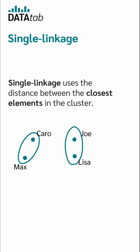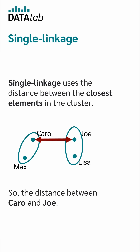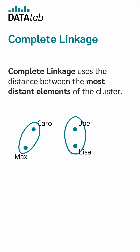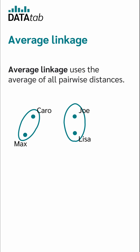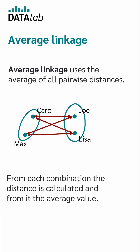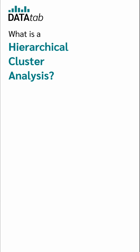Single linkage uses the distance between the closest elements in the cluster, so the distance between Caro and Joey. Complete linkage uses the distance between the most distant elements of the cluster, so between Max and Joey. Average linkage uses the average of all pairwise distances — from each combination the distance is calculated, and from those, the average value.